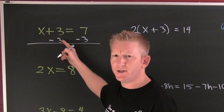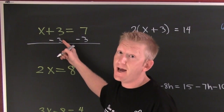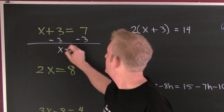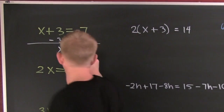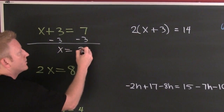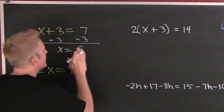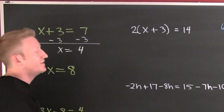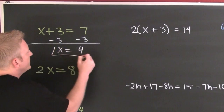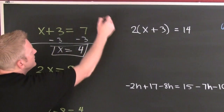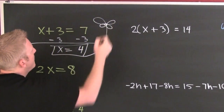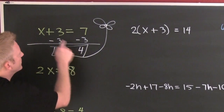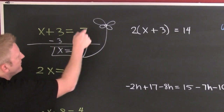What's that number that when added to a number the sum is zero? The additive inverse. And x is on the right side — it equals 4. But if you don't believe me, check it! Throw that sucker right back in and there's four plus three equals seven.